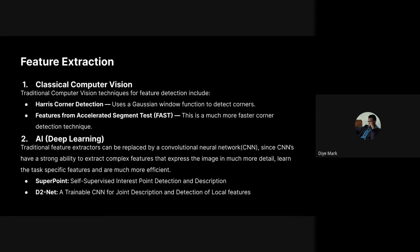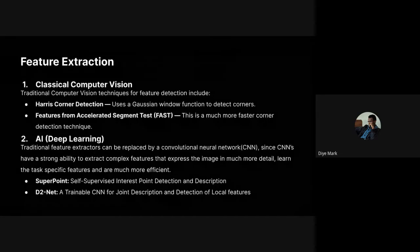We have algorithms for corners and for many other features. In the deep learning or AI-based approach, the key difference is that instead of a fixed algorithm, we use deep learning models to detect features. Convolutional neural networks (CNNs) have made a very significant contribution to visual detection and feature extraction.